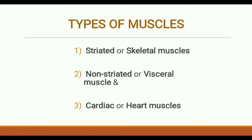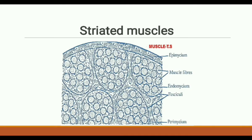Striated muscles are voluntary in action, but the others — non-striated and cardiac — are involuntary. This picture shows the transverse section of striated muscles. In vertebrates, muscles help in the movement of bones. Striated muscles are therefore important in locomotion, and are organized into thick bundles.